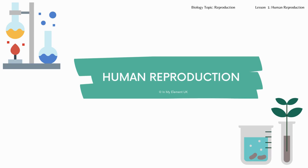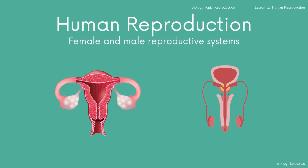Hello and welcome to the biology topic of reproduction, lesson one: human reproduction. During this topic, we're going to take a look at the male and female reproductive systems in humans — just focusing on humans at this point. You can see here a diagram of both male and female. What you need to be able to do is label the different parts of each system, and for many of the different parts, you need to know the role that they play. We're going to take a look at the female reproductive system first.